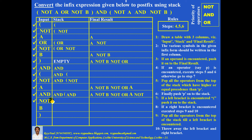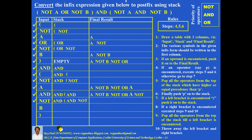Again an operator is encountered — two things. Step 5: remove all operators from the top of the stack which have equal or higher precedence than this one. AND has lower precedence compared to NOT, so AND should not be popped. Step 5 is over. Step 6: push this NOT operator onto the stack. An operand is encountered — push it onto the final result. B comes here.